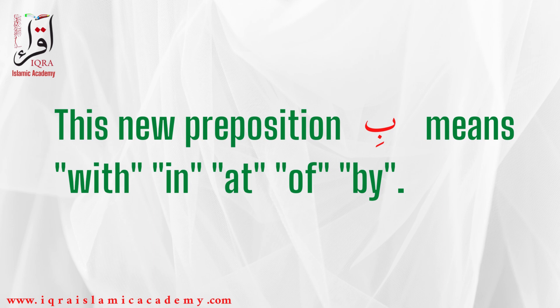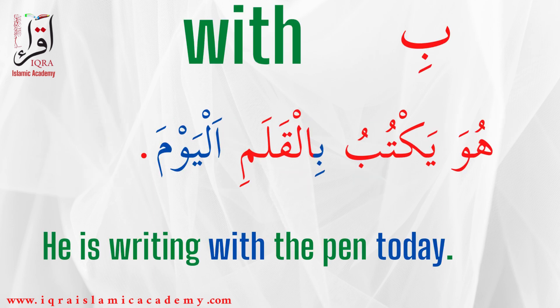Ba can mean 'with,' 'in,' 'at,' 'of,' or 'by.' For the meaning 'with,' the first sentence is: huwa yaktubu bil qalami al-yawm. Al-yawm is the new word in this lesson; al-yawm means 'today.' Huwa yaktubu — he is writing — bil qalami — with the pen — al-yawm — today.